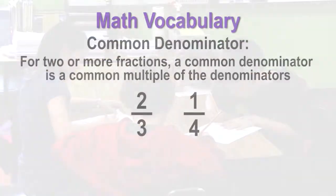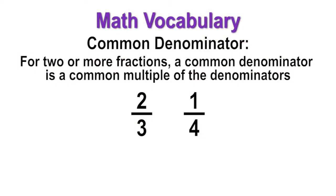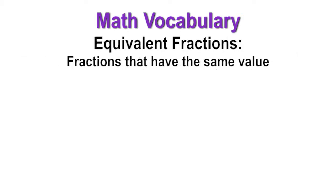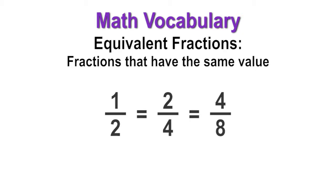Let's review some vocabulary. Common denominator: for two or more fractions, a common denominator is a common multiple of the denominators. Twelve is a common denominator for two-thirds and one-fourth. Equivalent fraction: fractions that have the same value. One-half is equivalent to two-fourths and four-eighths.